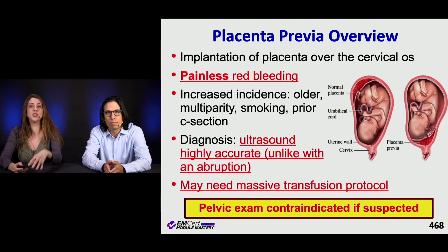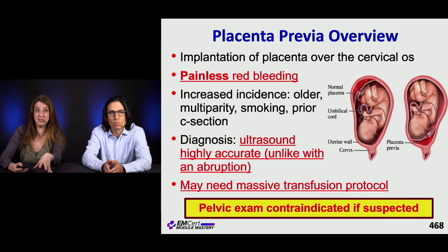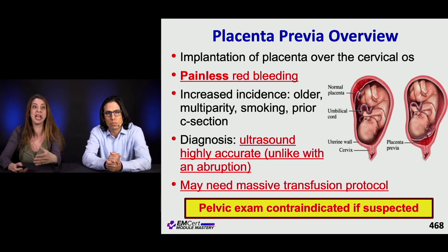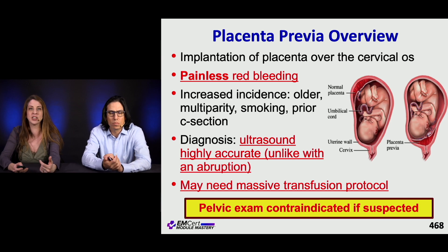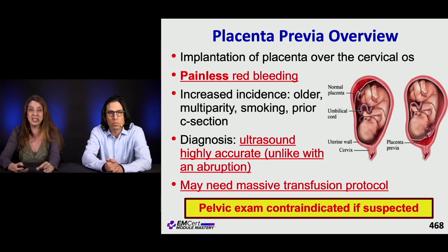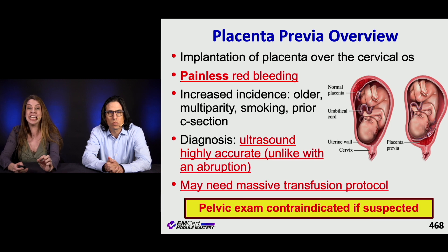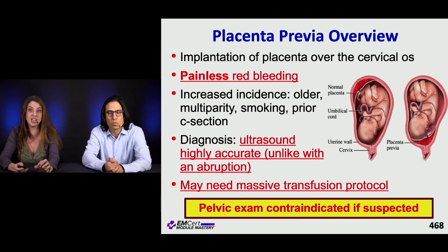Placenta previa presents with painless red bleeding, as opposed to placental abruption which is painful. Risk factors include older age, multi-parity, smoking, and prior C-sections. Diagnosis by ultrasound is highly accurate, unlike abruption. Patients can bleed extensively, so activate your massive transfusion protocol if needed. If you suspect placenta previa, do NOT perform a pelvic exam — it is contraindicated.